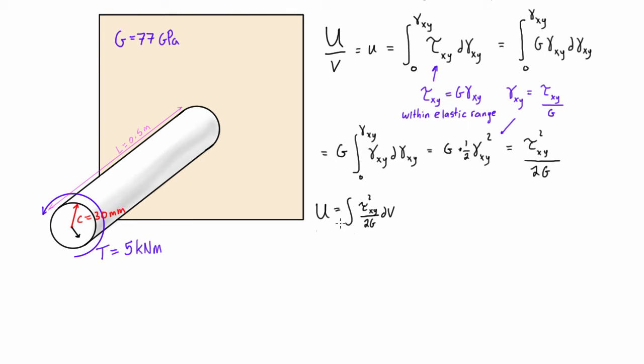This works for non-uniform cross sections, but in our case we have a uniform cross section along the whole length, so we know that the shearing stress is going to be equal to the internal torque there times rho, the distance radially out from the center, over the polar moment of inertia.